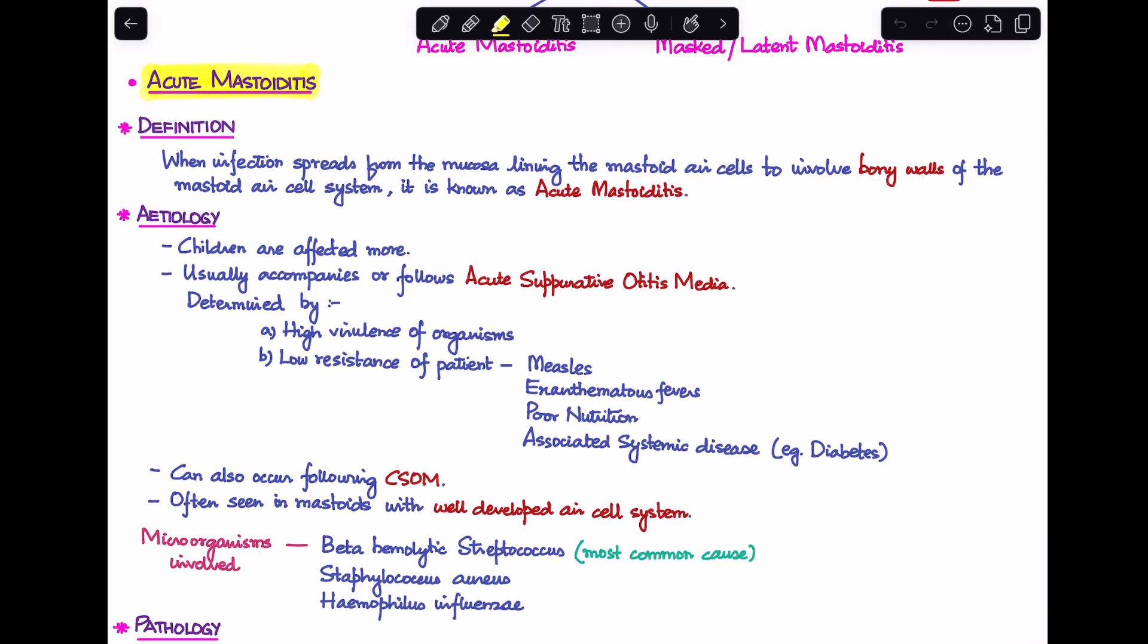What is acute mastoiditis? We know that in a case of otitis media, it can lead to involvement of the middle ear cleft, which involves the mastoid, antrum, attic, middle ear, and the eustachian tube. When infection spreads from the mucosa lining the mastoid air cells to involve the bony walls of the mastoid air cell system, that condition is known as acute mastoiditis. Mastoiditis is not when just the mucosa has been involved; it's when the bony walls of the mastoid get involved.